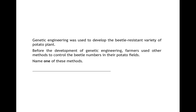The next question discusses genetic engineering being used to develop a beetle-resistant variety of potato plants. Before genetic engineering, farmers used other methods to control beetle numbers. You could answer biological control, or you could say pesticides were used before genetic engineering became an alternative.